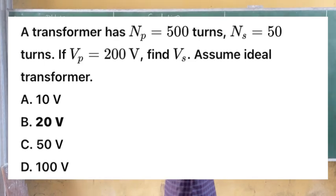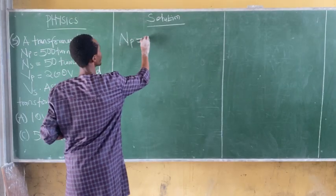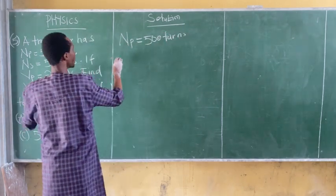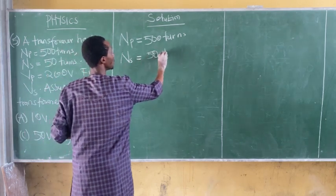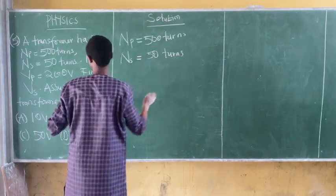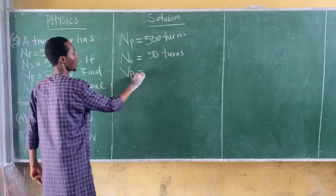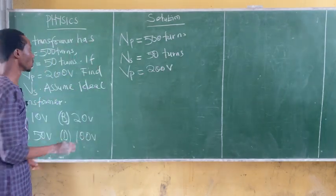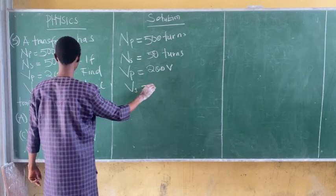From the question, we are given certain parameters. The first parameter is the number of primary turns, NP, equal to 500 turns. We are also given the number of secondary turns, NS, to be 50 turns. The primary voltage VP is 200 volts. We need to find the secondary voltage VS, which is unknown.